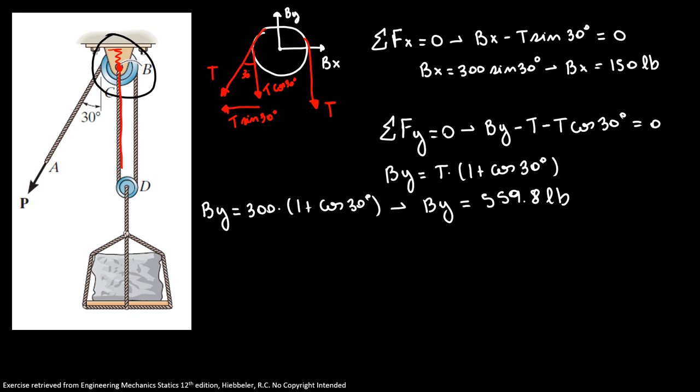Now our magnitude of B is given by B squared equals B_Y squared plus B_X squared. So here our B is the square root of 150 squared plus 559.8 squared. So our B equals 579.6, or B equals 580 pounds.